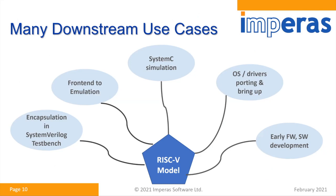Now that we have the new RISC-V model, there are many downstream use cases. You can encapsulate it into a SystemVerilog testbench, use it as a front-end to emulation systems — for example, getting to a Linux prompt takes about 700 million instructions, so a virtual model really shortcuts that process. You can use it for SystemC simulation, and a very popular use case is OS and drivers porting and bring-up, as well as early firmware and software development.